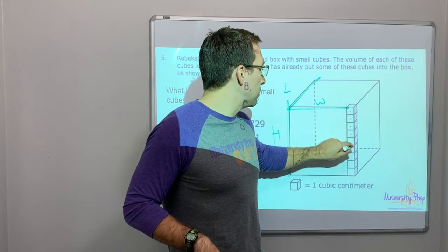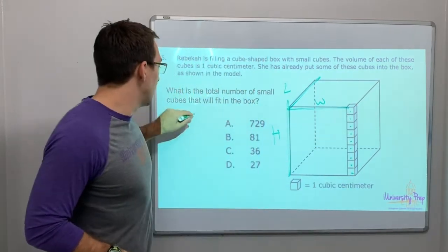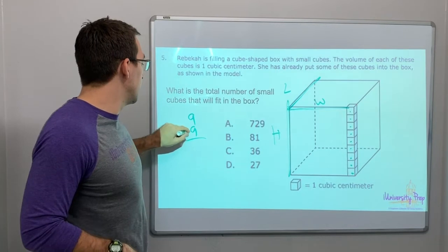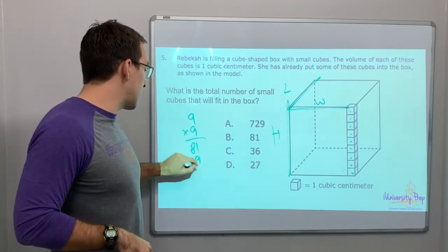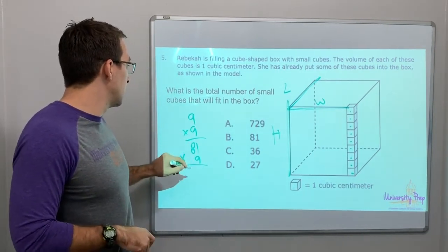So one, two, three, four, five, six, seven, eight, nine. Nine times nine is eighty-one. Eighty-one times nine is...